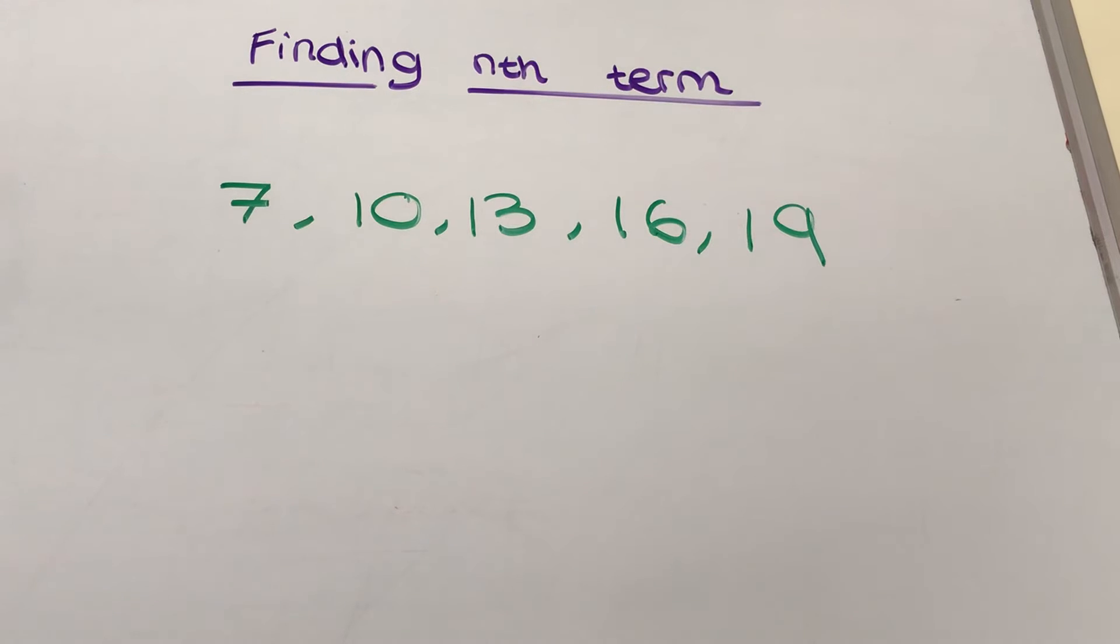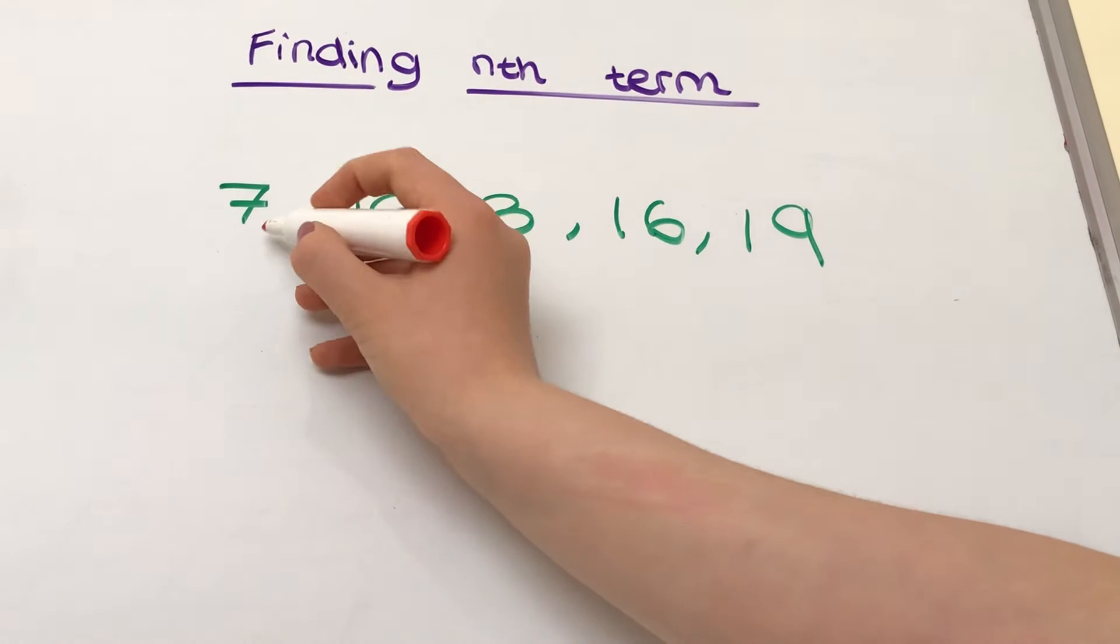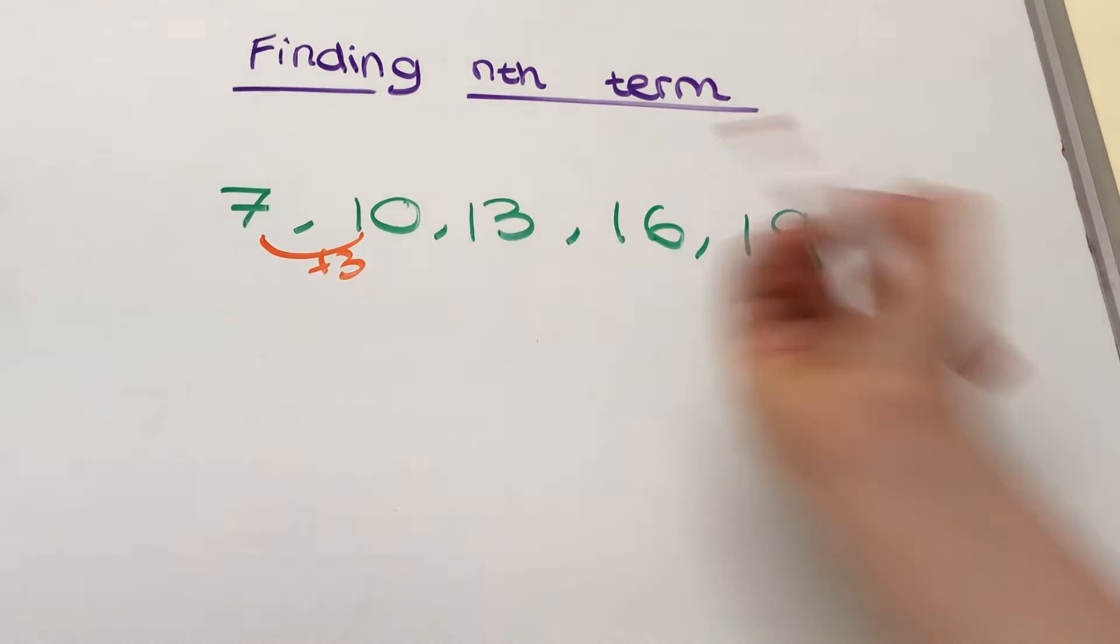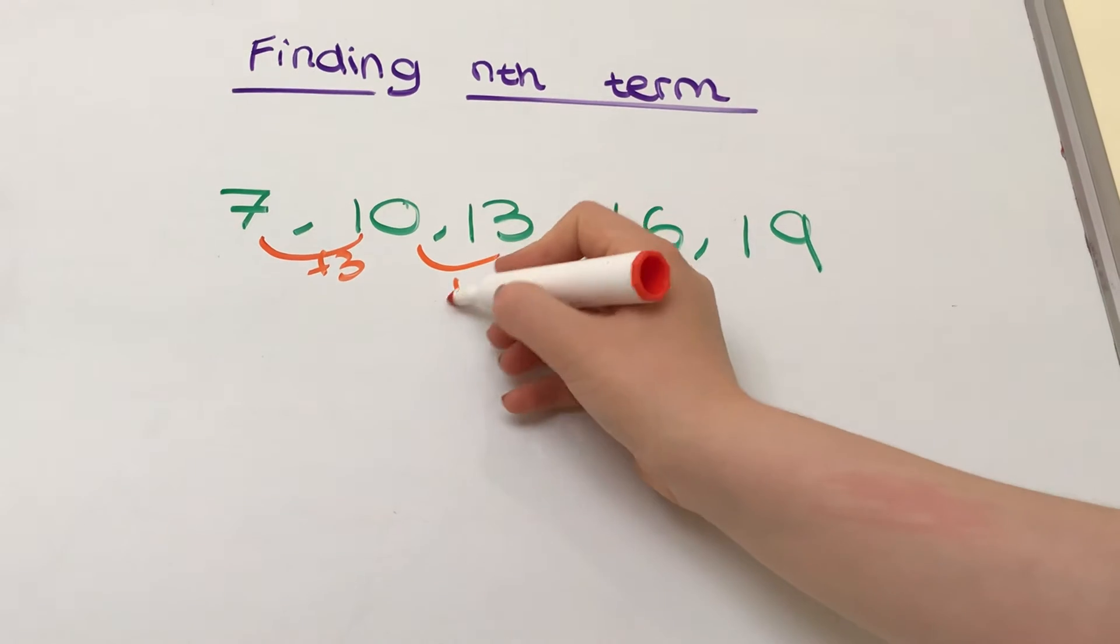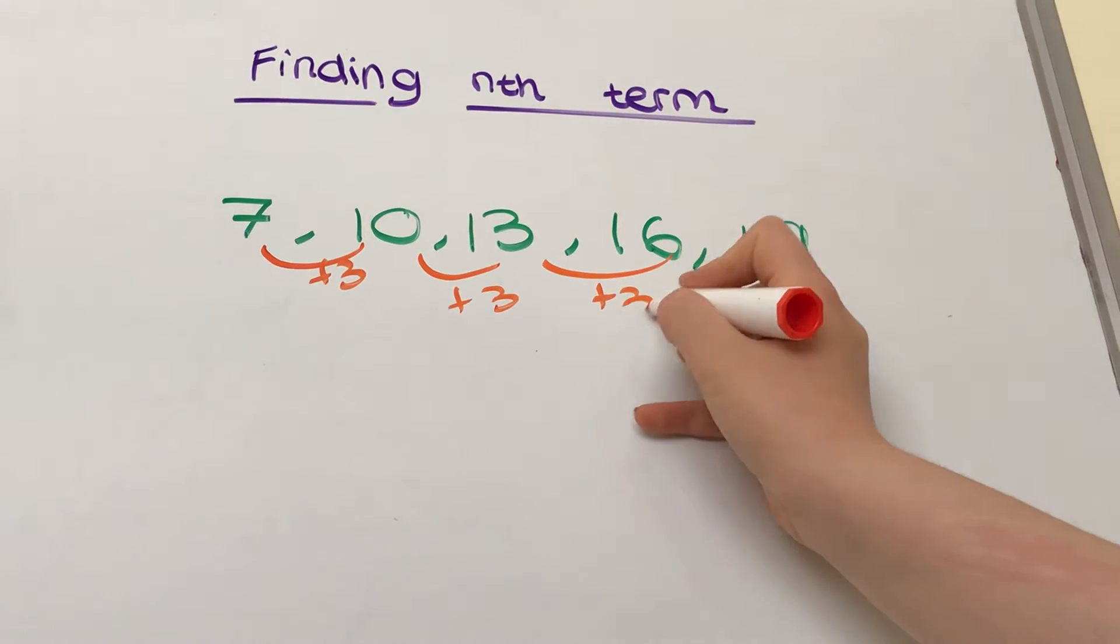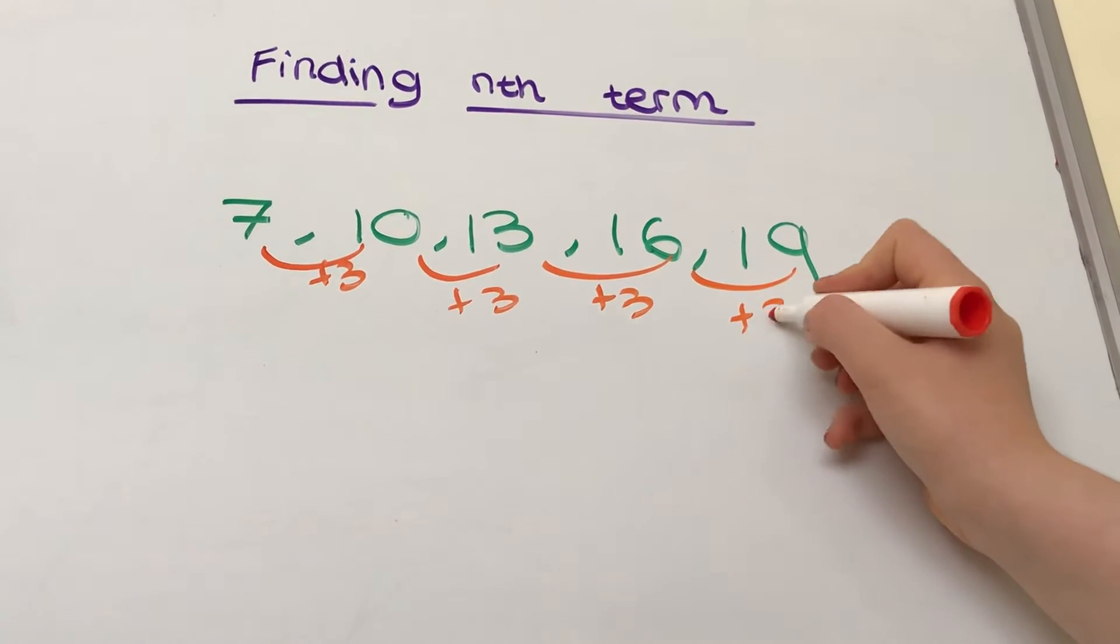Well I know that 10 minus 7 is 3, so 7 add 3 is 10. So I know for this particular one to get there I'm adding 3, and 10 add 3 is 13, so it's going to be again adding 3. The same goes for 13 to 16 and then the same goes for 16 to 19.